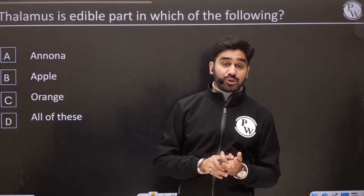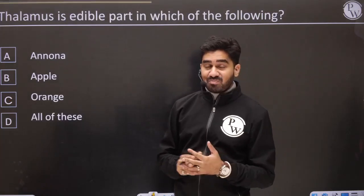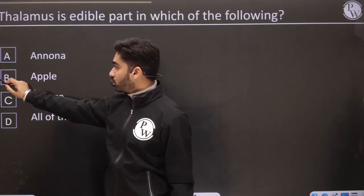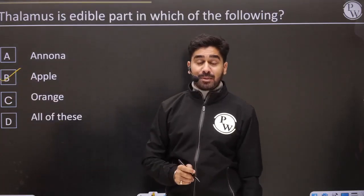Thalamus is edible in which of the following? The part where thalamus is the edible portion — we said that is a feature of false fruit. Apple and pear.